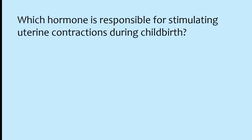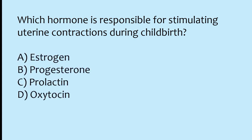Which hormone is responsible for stimulating uterine contractions during childbirth? Options: estrogen, progesterone, prolactin, oxytocin. The correct answer is option D: oxytocin hormone is responsible for stimulating uterine contractions during childbirth.